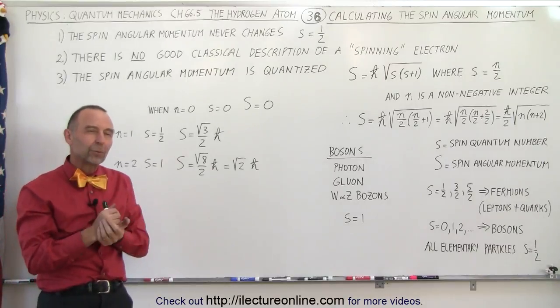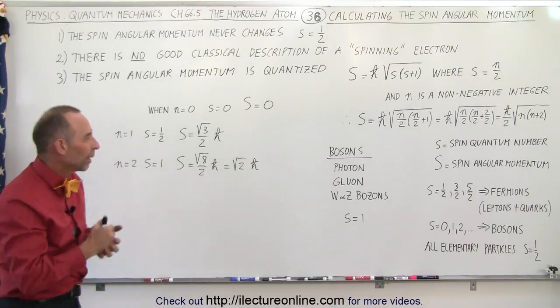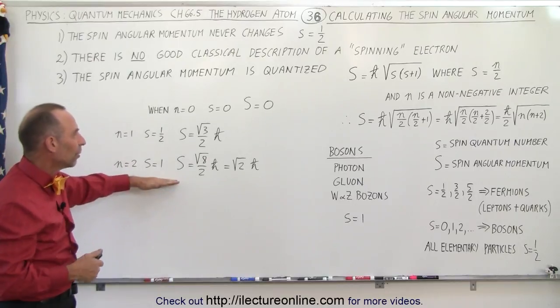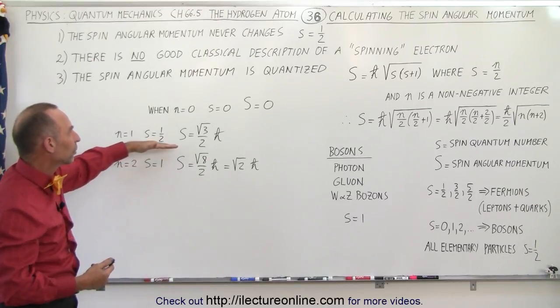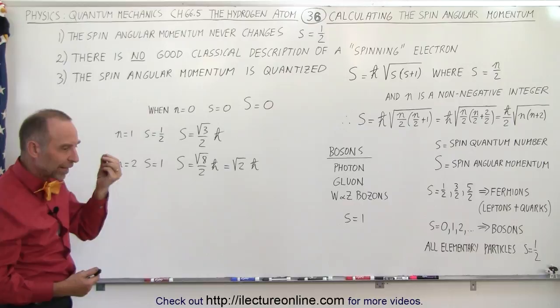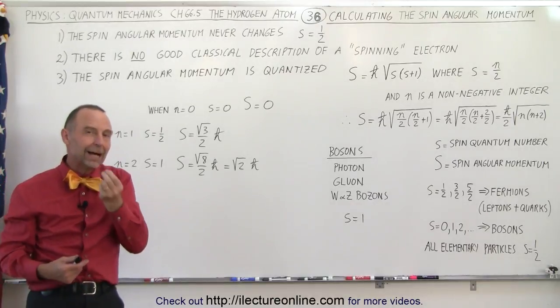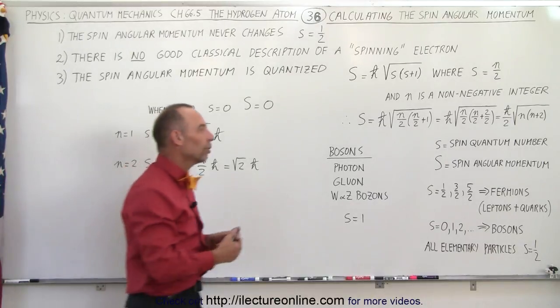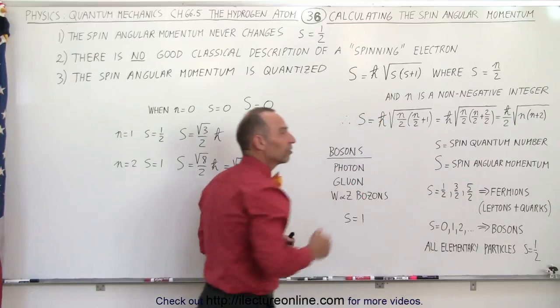So we need to kind of figure out what that actually is. What does it really represent? We'll try to figure that out. But in the meanwhile, at least, we're able to calculate it. We have a fairly good idea what it is. It's simply a contributing component of the angular momentum. We call it spin.